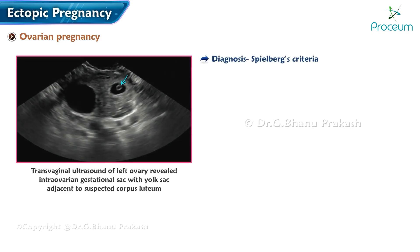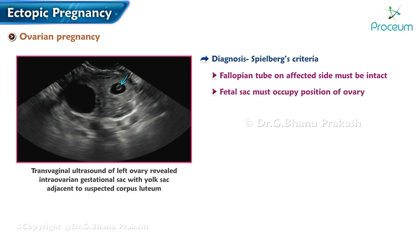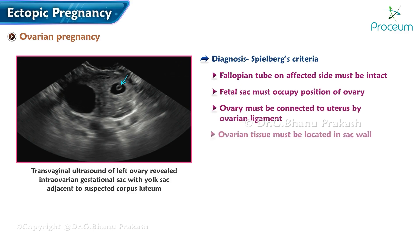Ovarian pregnancy — Spielberg's criteria for diagnosis of primary ovarian pregnancy: the fallopian tube on the affected side must be intact, the fetal sac must occupy the position of the ovary, the ovary must be connected to the uterus by the ovarian ligament, and ovarian tissue must be located in the sac wall.